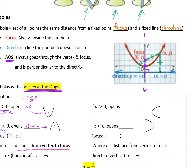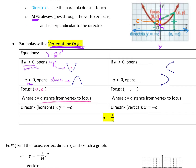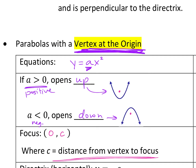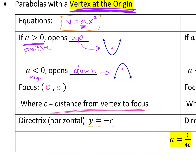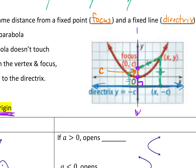So from the vertex to the focus, that's always going to be your C value. Your directrix will always be, in this case where it's y equals ax squared, the line y equals the opposite of C. So whatever the distance was to the focus, it's the same distance to the directrix. So it's going to be the opposite — if this was C units here, this needs to be C units here. So y equals the opposite of whatever our C was.